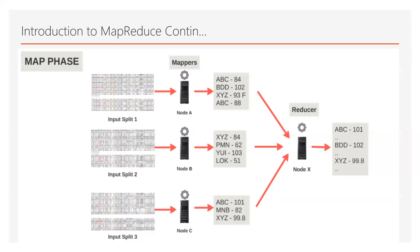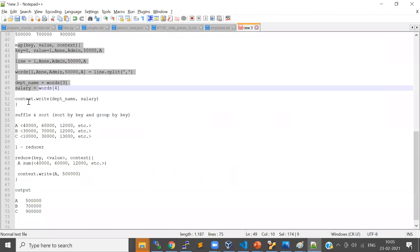The framework handles how many input splits you have — it's almost equal to the number of blocks, except it maintains the logical boundary of your records. For every input split or block, a mapper will run and get a key-value pair. Based on your logic you write the output key-value pair, which gets sorted and grouped and sent to the reducer. The reducer aggregates the data and writes the result as a key-value pair as well.